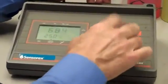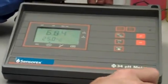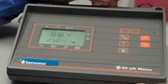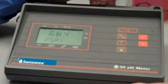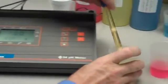For this meter, I hit the standardized button, and the meter will go through some steps to automatically lock in on the buffer 7. As soon as the display stops flashing, it's locked into a pH of 7.